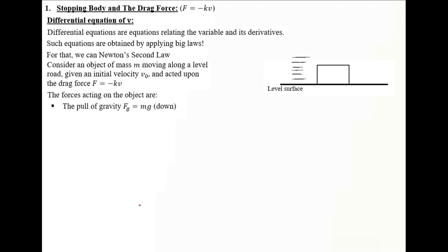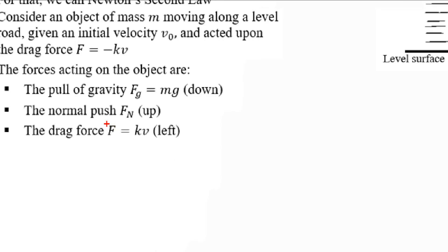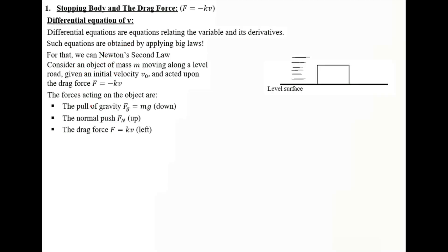The forces acting on the object are the pull of gravity downward, the normal force upward, and the drag force. The drag force magnitude is represented here, and the force itself includes a minus sign representing that it opposes the motion. We consider different instances along which we utilize the free body diagram, because this is a variable force.